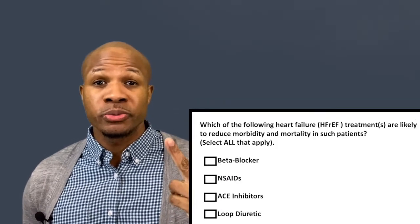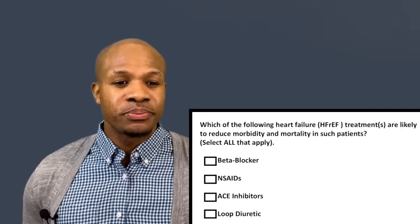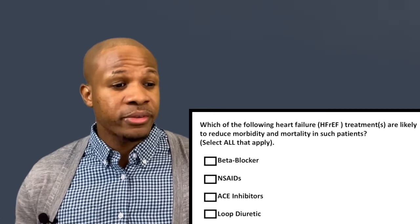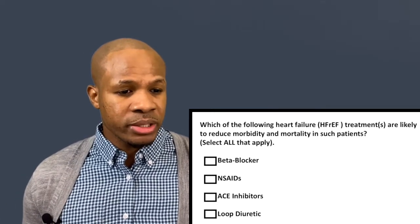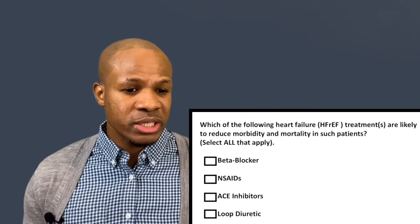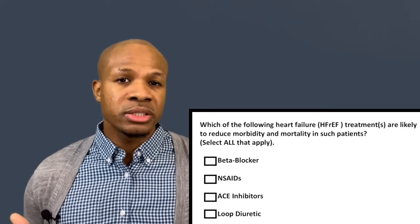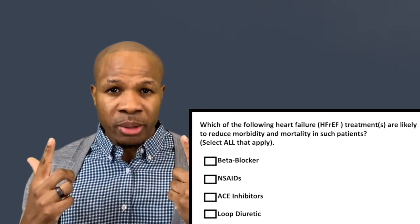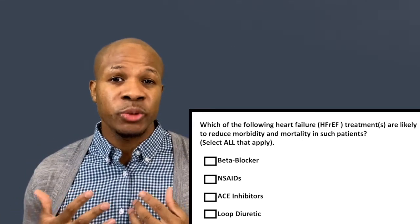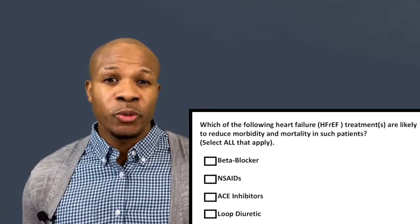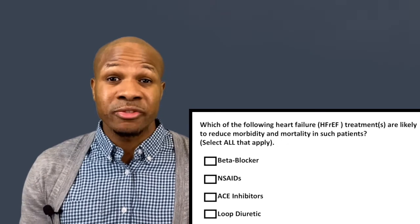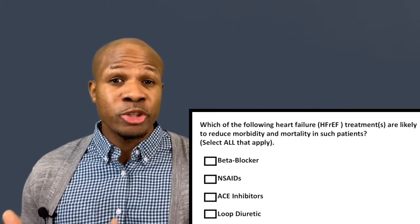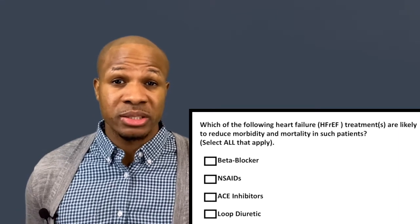Question number two asks: which of the following heart failure treatments for HFrEF are likely to reduce morbidity and mortality? Select all that apply. HFrEF is heart failure with reduced ejection fraction, meaning the heart can only pump about 44% of the total blood coming to it from the veins.